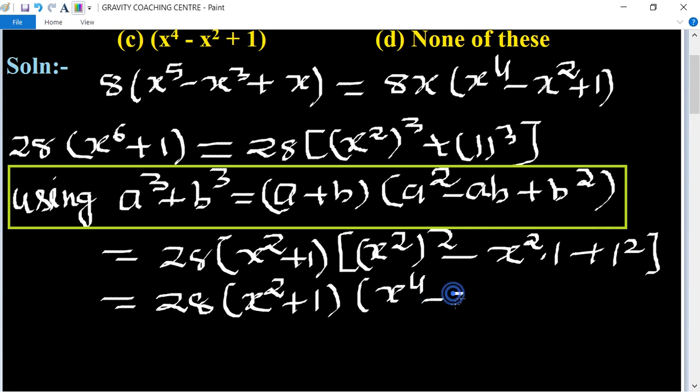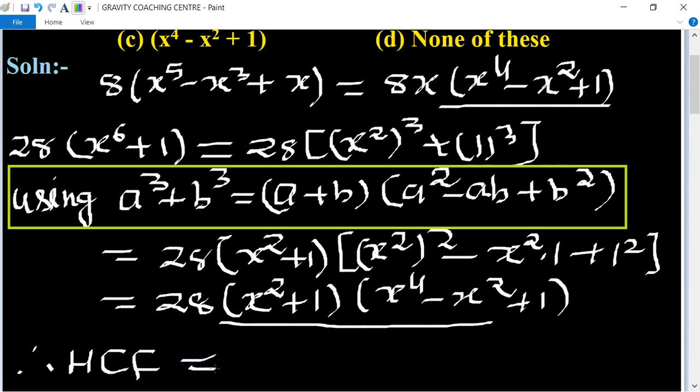From the first and second expressions, we get the common parts. Therefore, HCF equals 4 (the HCF of 8 and 28) times the common algebraic factor (x^4 - x^2 + 1).